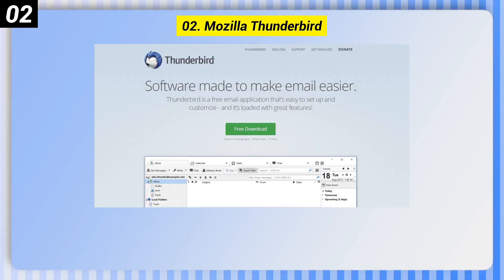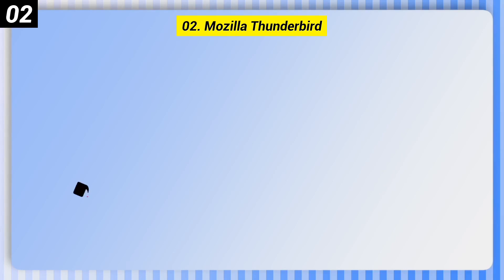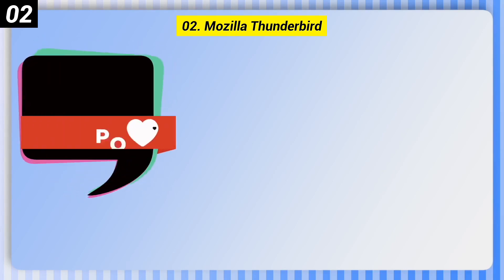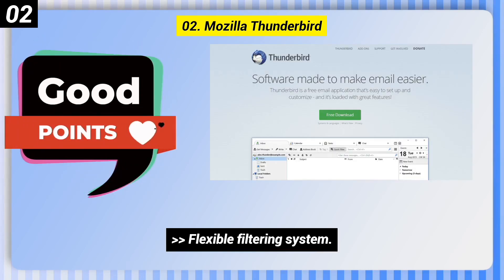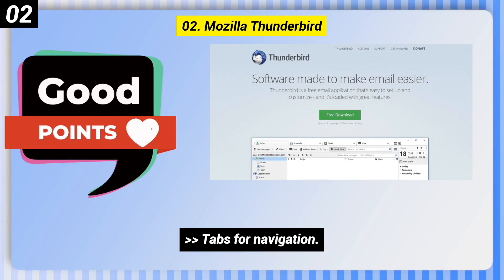Number 2: Mozilla Thunderbird. Here are some good points of this one. It has a flexible filtering system, many available plugins, and tabs for navigation.